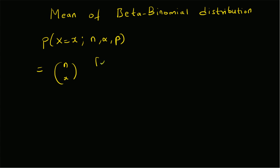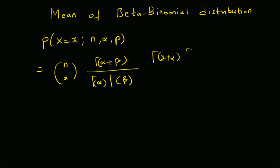Then we have gamma of alpha plus beta divided by gamma of alpha times gamma of beta, and then gamma of x plus alpha times gamma of n minus x plus beta, all divided by gamma of alpha plus beta plus n. That is the definition of the beta binomial distribution.